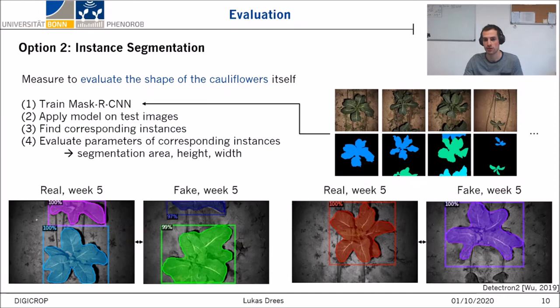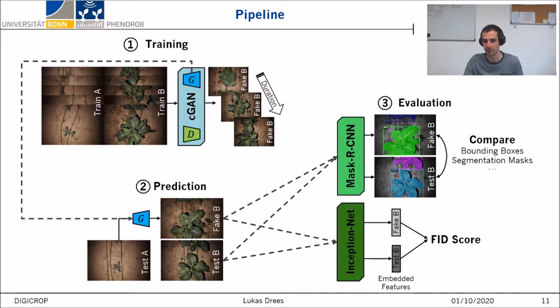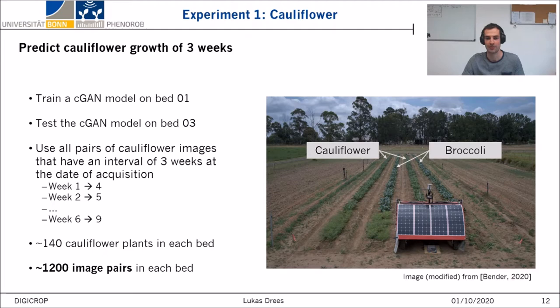Let me summarize the pipeline again. It basically consists of three steps. First, we train a conditional GAN, for which we need image pairs of different growth stages. In the next step, we take previously unseen images and predict new fake images. And third, we evaluate the fake images by calculating instance segmentation and the FID score. With this, I would like to present some experiments and results.